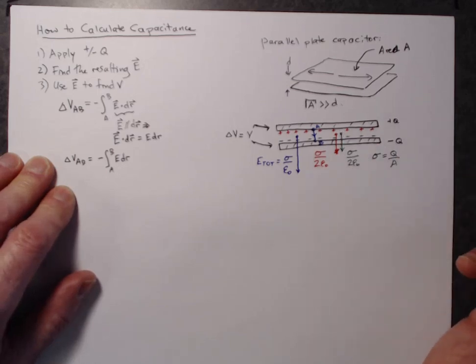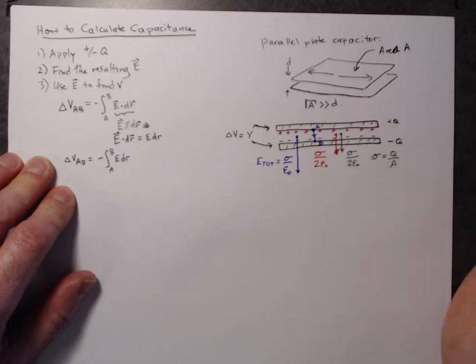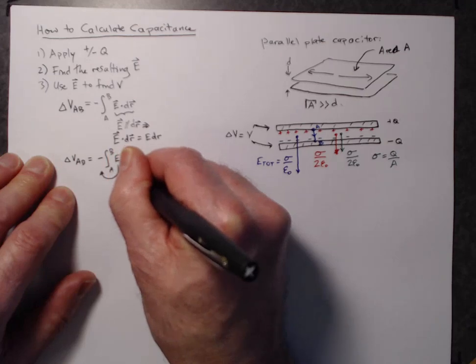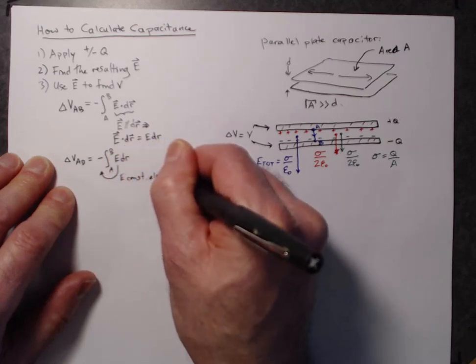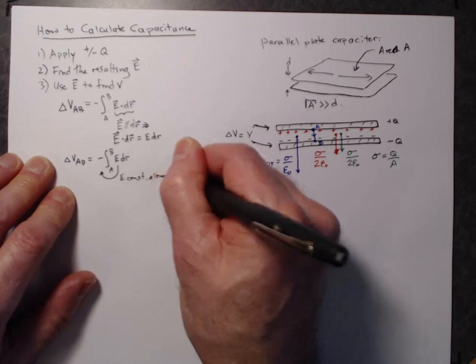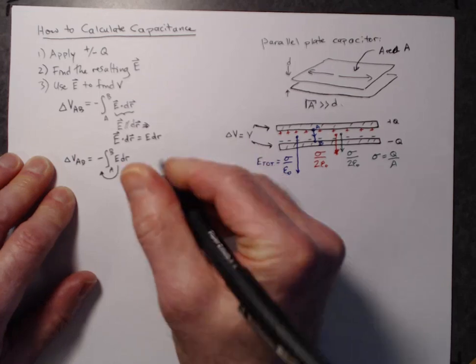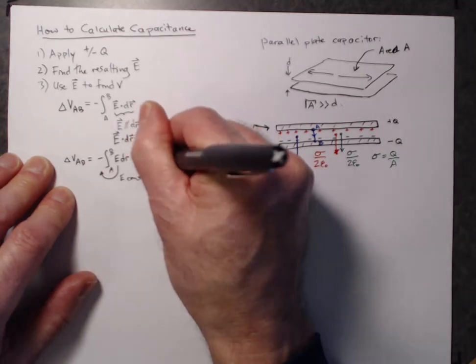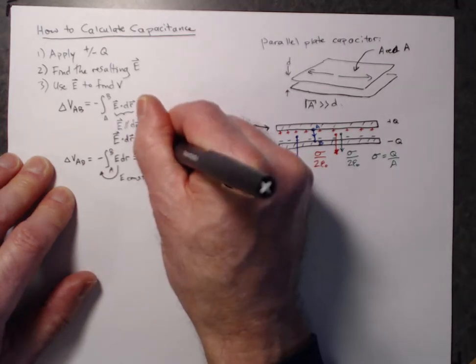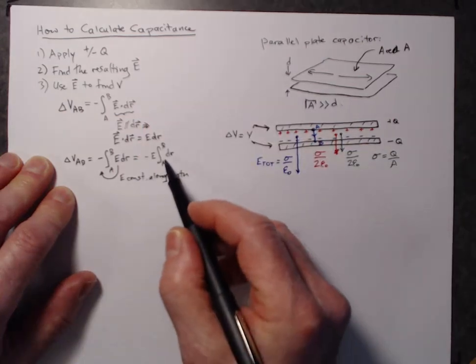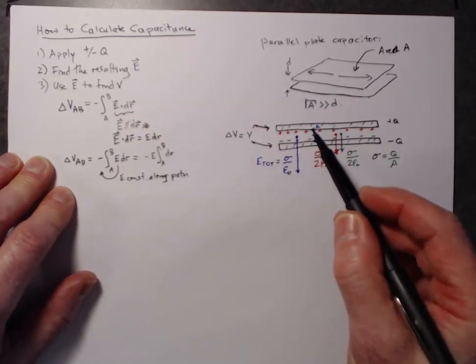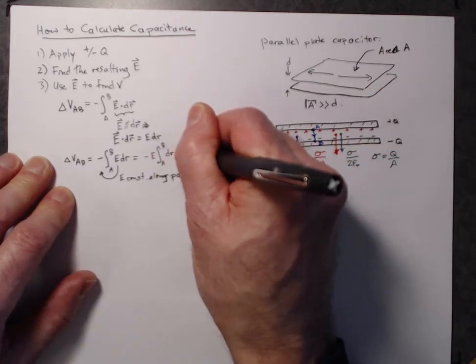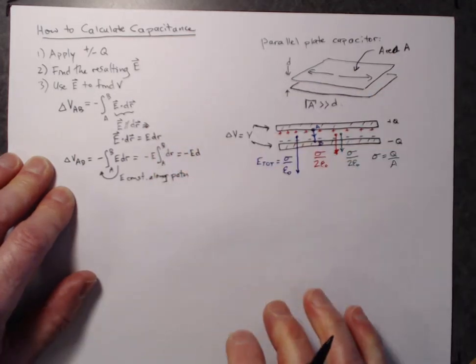So the electric field is constant along this path from point A to point B. So I can take it out of the integral, E constant along path. So that means that delta VAB is minus E times the integral from A to B of dr. The integral from A to B of dr is just the path length, which is the distance between the sheets. So this is minus E times D for this particular case.